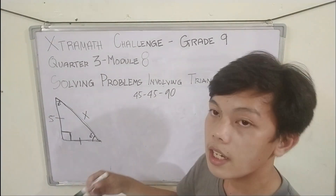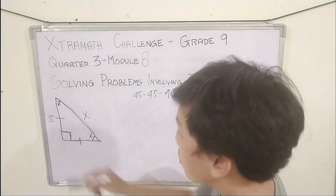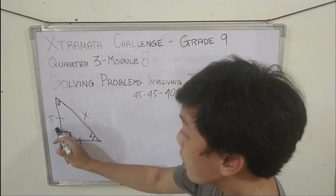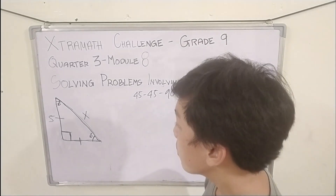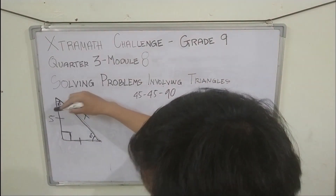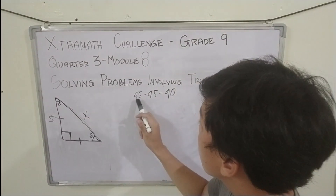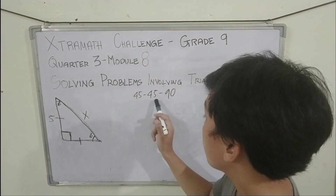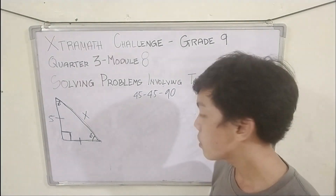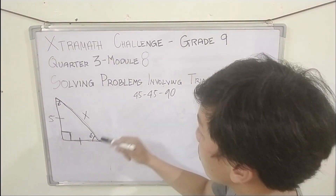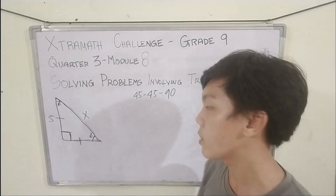We have here an example of an isosceles right triangle. It is an isosceles right triangle since both legs are congruent and both angles are 45 degrees. We have the 45-45-90 triangle theorem that will help us solve the value of x.